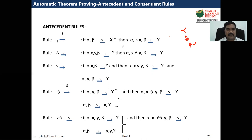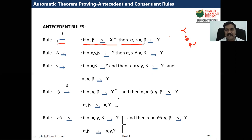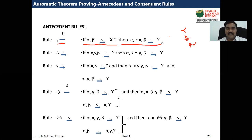Now listen carefully. The first rule is 'negation before logical sequence.' The rule states: if alpha, beta yields x, gamma — then alpha, negation of x, beta yields gamma. When you first read this it may not be clear, since these are all Greek letters — alpha, beta, gamma.